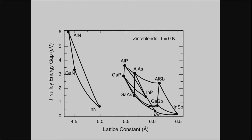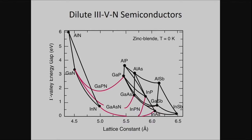Then in 1990, something big happened. The Japanese made the first blue-green laser and LED using nitride compounds. So we were thinking about how to use our current technology at that time to make nitride compounds.